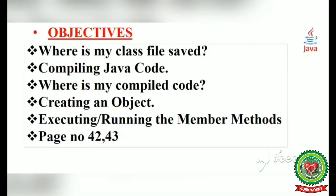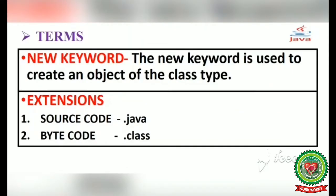We will discuss all these objectives through page number 42 and page number 43. The key term today is the new keyword, which is used to create an object of a class type. We will also discuss extensions: the source code file in high level language has extension .java, and the bytecode file has extension .class.